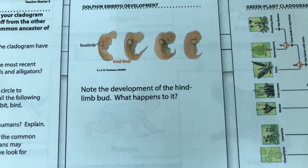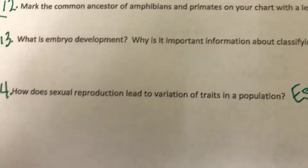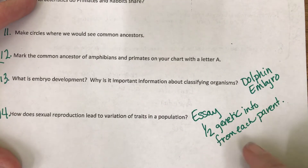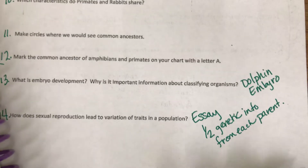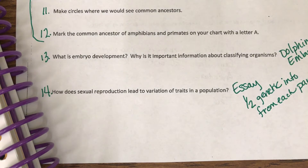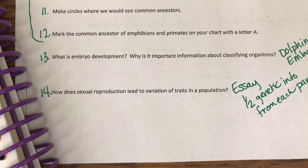Question number 14: how does sexual reproduction lead to variation of traits in a population? Sexual reproduction allows for half the genetic information to come from each parent. Sexual reproduction leads to variation of traits in a population because organisms receive genetic information from both parents. The combination of alleles inherited from parents codes for the traits in the offspring. Over generations, the variation in individuals leads to variation in a population.